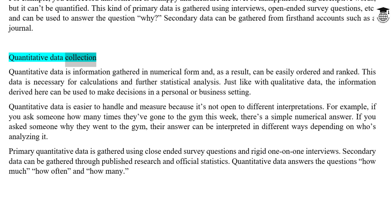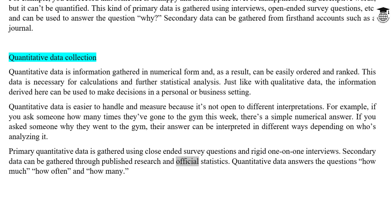Quantitative data is information gathered in numerical form and, as a result, can be easily ordered and ranked. This data is necessary for calculations and further statistical analysis. Just like with qualitative data, the information derived here can be used to make decisions in a personal or business setting. Quantitative data is easier to handle and measure because it's not open to different interpretations. For example, if you ask someone how many times they've gone to the gym this week, there's a simple numerical answer, whereas asking why they went can be interpreted in different ways. Primary quantitative data is gathered using close-ended survey questions and rigid one-on-one interviews. Secondary data can be gathered through published research and official statistics. Quantitative data answers the questions: how much, how often, and how many.